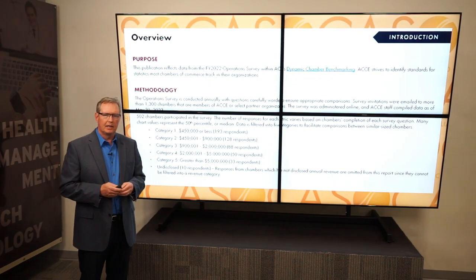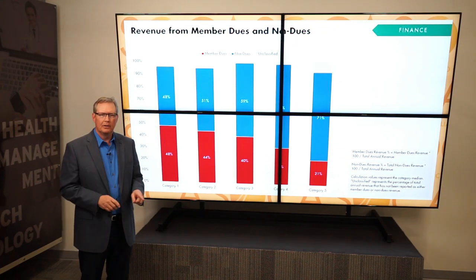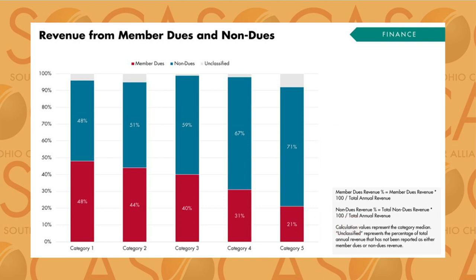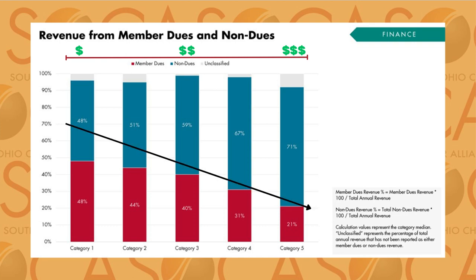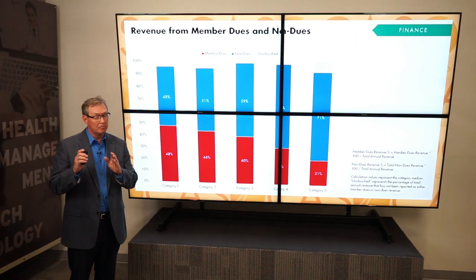For all of the new chamber execs and board members watching today, if you don't get anything else from this video, make sure you understand this graphic right here. Revenue in chambers of commerce is divided into two broad categories: dues revenue and non-dues revenue. Even among the smallest chambers of commerce, the median percentage of revenue derived from member dues compared to all other sources was evenly split.